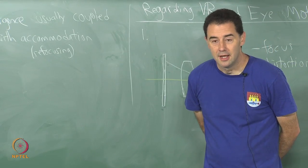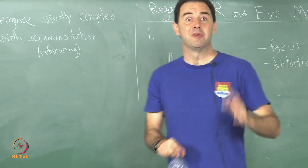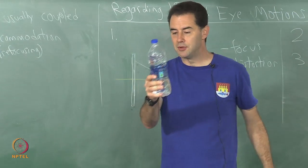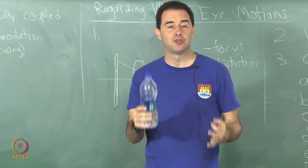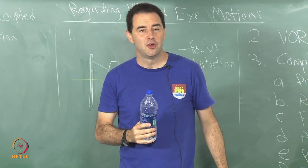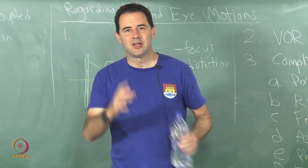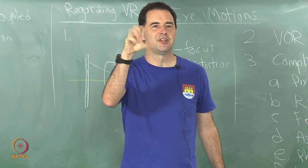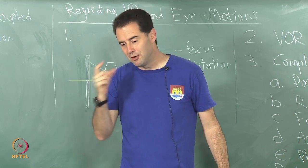In the real world, and again this is for younger people, when you bring an object very close your eyes are converging towards it and then they are also refocusing the lens. Those muscles are tightly correlated, tightly coupled, almost like when I move all the muscles in my hands together to grasp something. I am not really thinking about the individual muscle movements. These are very tightly coupled.